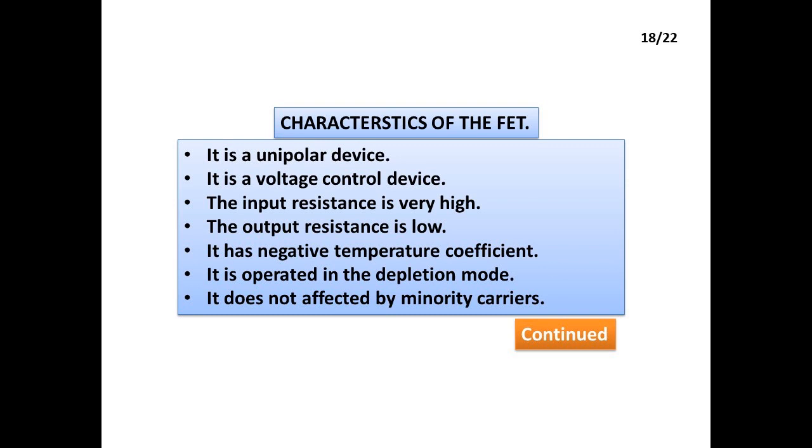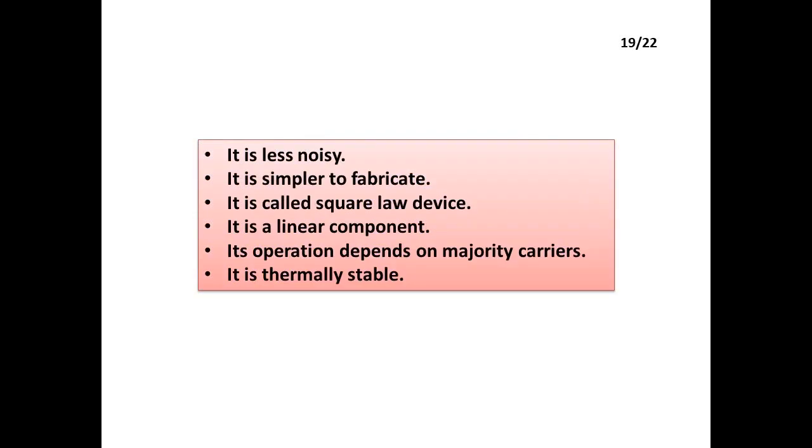Characteristics of the FET: It is a unipolar device. It is a voltage control device. The input resistance is very high. The output resistance is low. It has negative temperature coefficient. It is operated in the depletion mode. It is not affected by minority carriers. It is less noisy. It is simpler to fabricate. It is called square-law device. It is a linear component. Its operation depends on majority carriers. It is thermally stable.